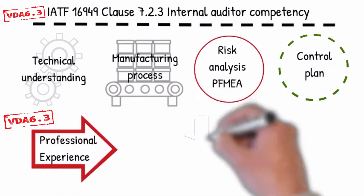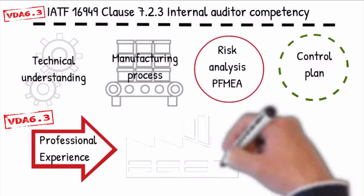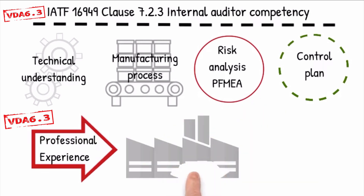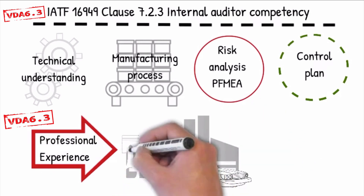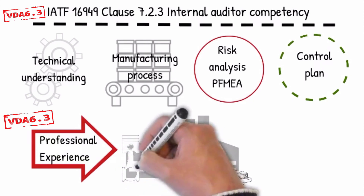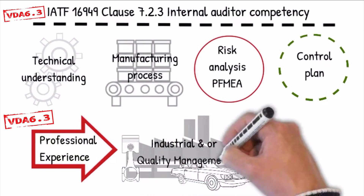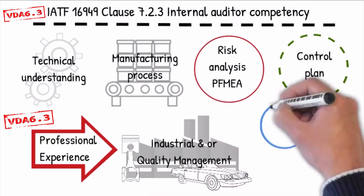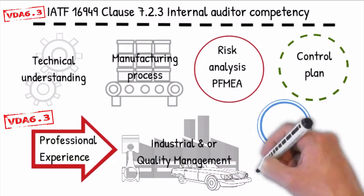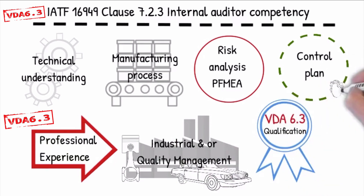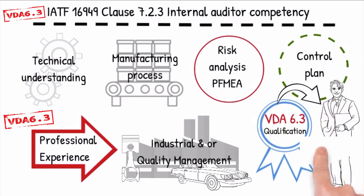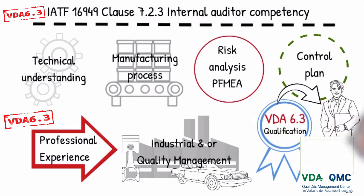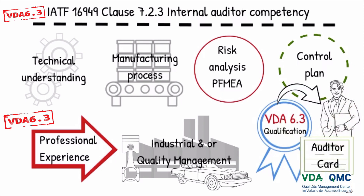In addition, the VDA requires internal process auditors to have at least three years of experience, of which one year is to be in industrial or quality management in an automotive manufacturing environment. They should also pass the VDA QMC knowledge test. Supplier auditors need five years of industrial experience, at least two of which in quality management, and must pass the VDA QMC qualification for certified process auditor.